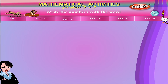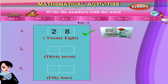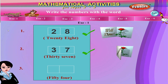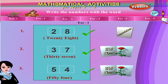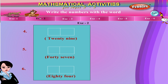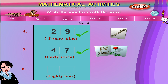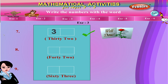Number in Words. Write the number with the word. Correct, correct, correct, correct, correct, correct, correct, correct.